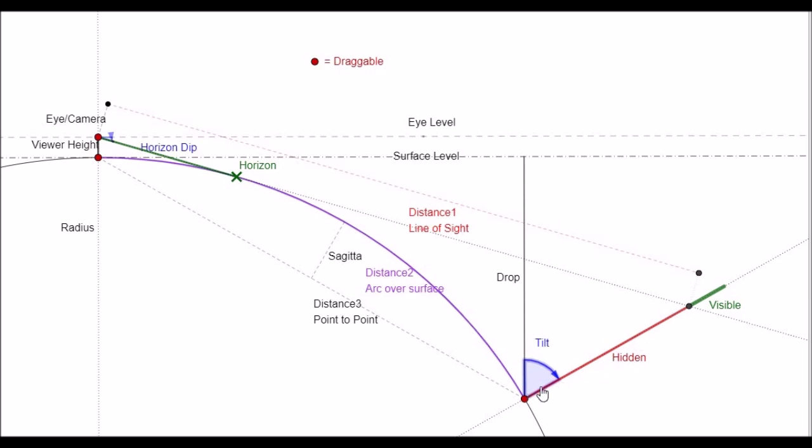So the object, the vast majority of the object is now hidden from view, with only the top quarter or so being visible in the diagram.